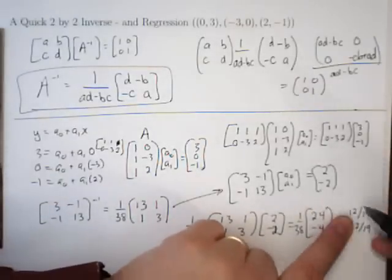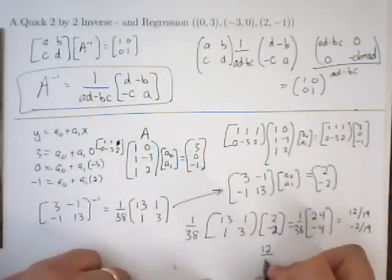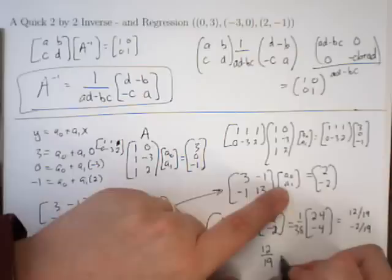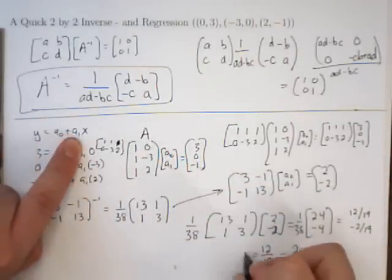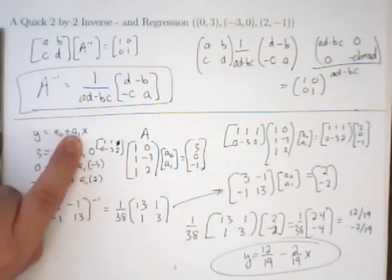Which gives us the solution, A0 is 12 19ths and A1 is negative 2 19ths. So, notice A1 should be times by x. And that's our solution. That completes the square.